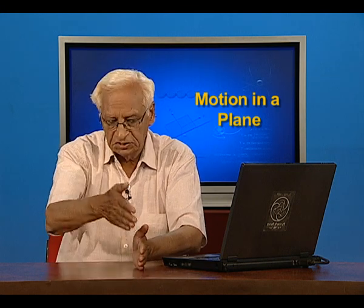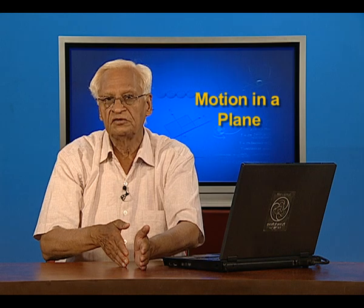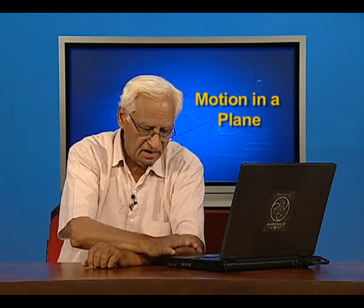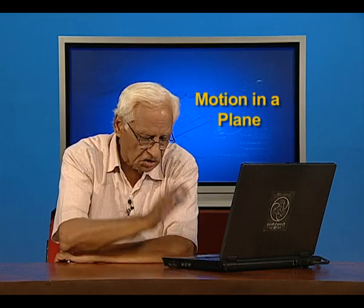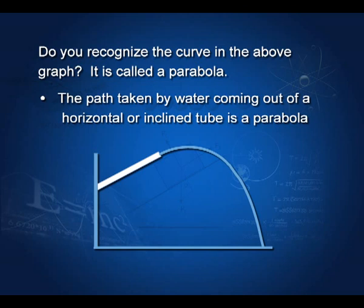After each second, we note the position along the x-axis and the position along the y-axis from the top of the building and assemble the data in a table. Along the horizontal axis, the distance is 10, 20, 30 meters after 1, 2, 3, 4, 5 seconds. On the vertical axis, the distance from the top is 0, 5, 20, 45, 80, 125 meters. We plot this along the x and y axes and find that the curve has the shape of a parabola.